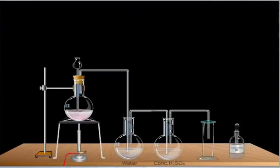Add a few drops of concentrated hydrochloric acid to the potassium permanganate solution through the thistle funnel.